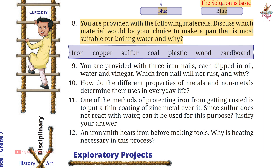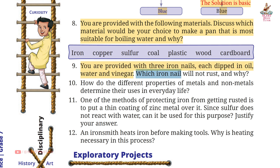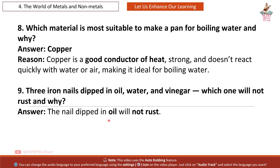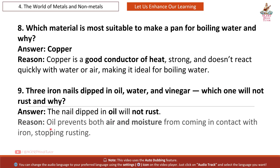Question 9: You are provided with 3 iron nails each dipped in oil, water, and vinegar. Which iron nail will not rust and why? Answer: The nail dipped in oil will not rust. Reason: Oil prevents both air and moisture from coming in contact with iron, stopping rusting.